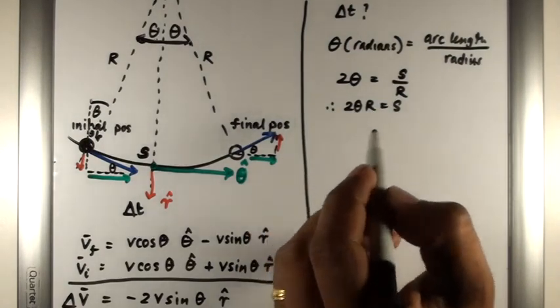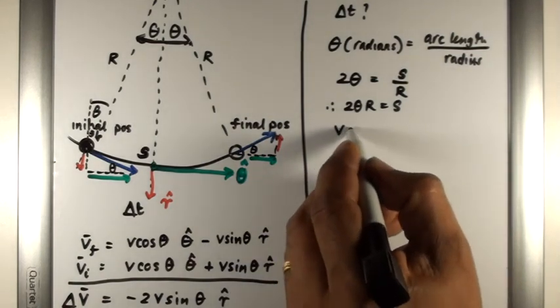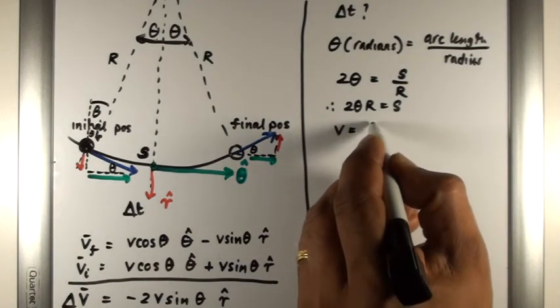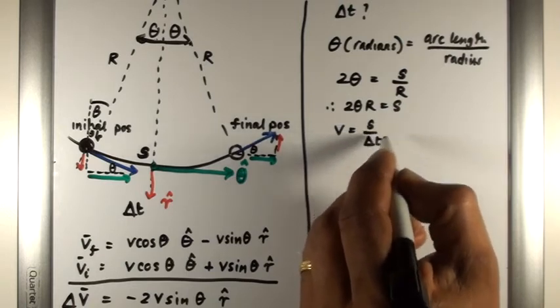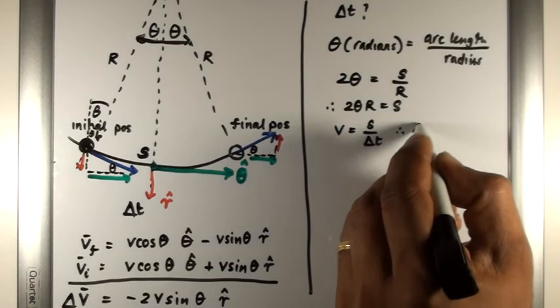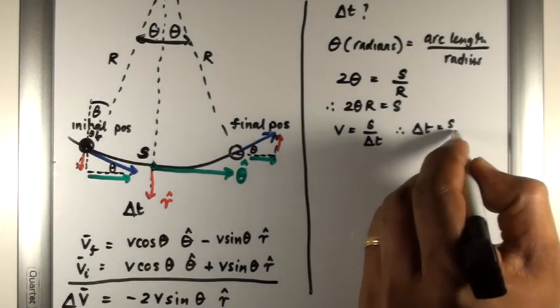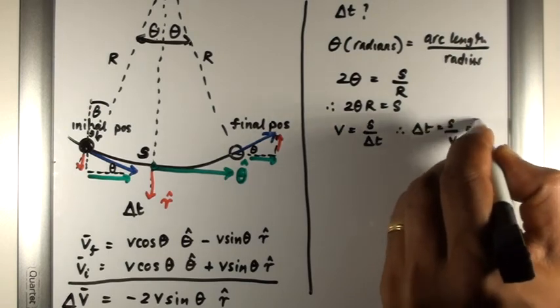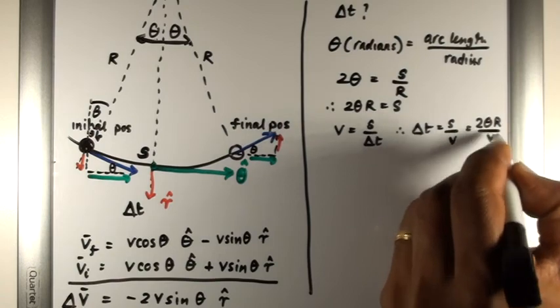Now, we know the speed is constant, and we know speed is going to equal distance, the S, over delta T. So therefore, delta T must equal S over V, which is 2 theta R over V.